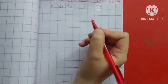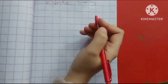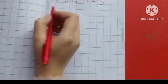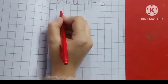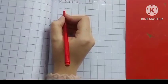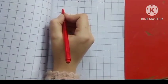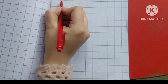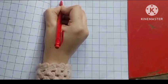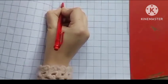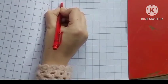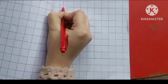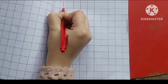Now students, I want to show how to write these numbers. Look at here. How to write number 1. I start from this line, and then go down and down, and touch the down line.